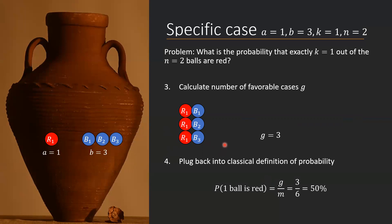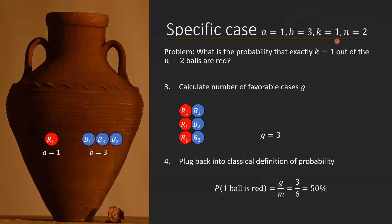This method could in principle be used to solve this problem for any A, B, k, and n. But it would take an absurd amount of time, because enumerating all cases becomes a very big number very quickly. Even with n equals 10 and k equals 5, we get close to 200 different possibilities. Therefore, a natural question is: can we do this in a smarter way? And yes — that way is the binomial coefficient.